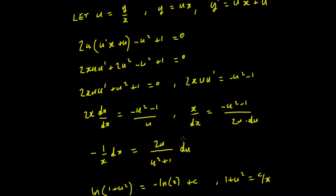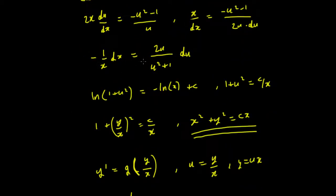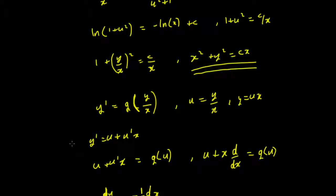The variables have now been separated — all the x's on one side and all the u's on the other — so we can integrate. Integrating the left side gives ln(1 + u²) and integrating the right side gives minus ln x. That means we can rewrite this as 1 + u² equals c/x. Multiplying both sides by x² and substituting back gives x² + y² equals cx. That's the solution.